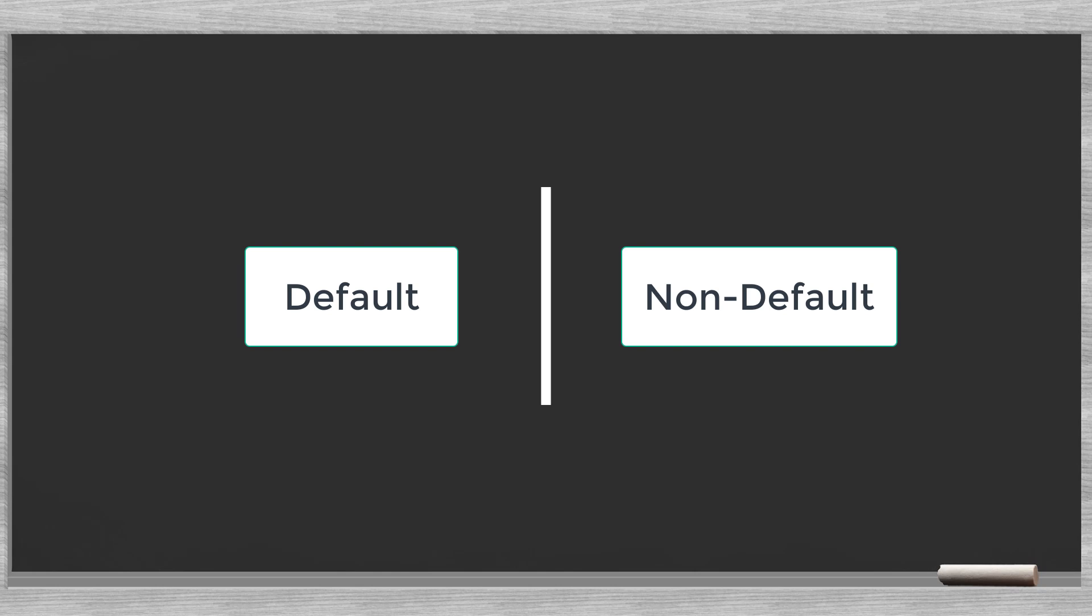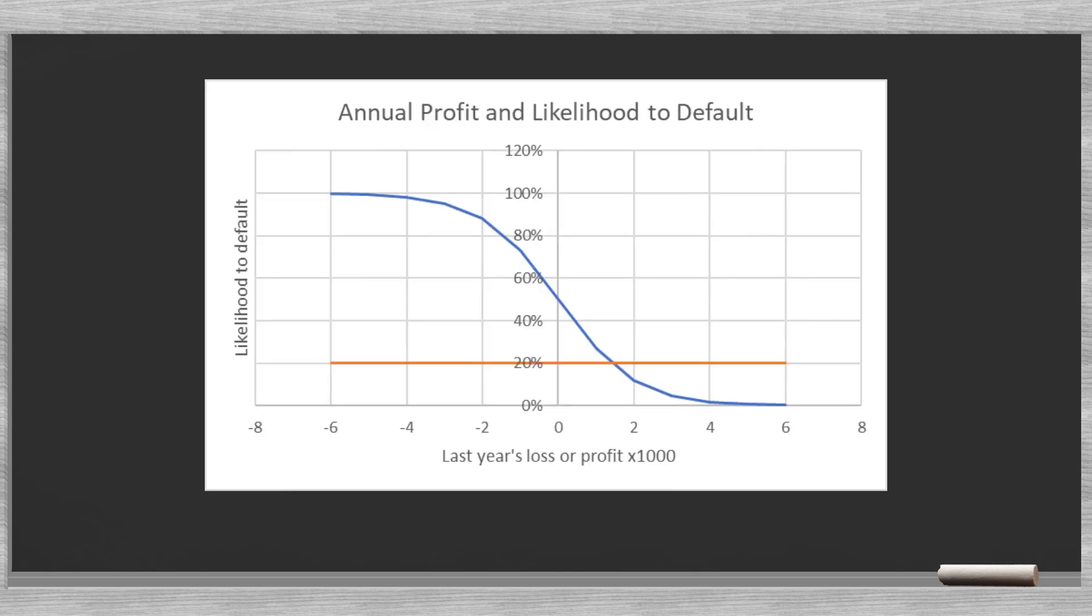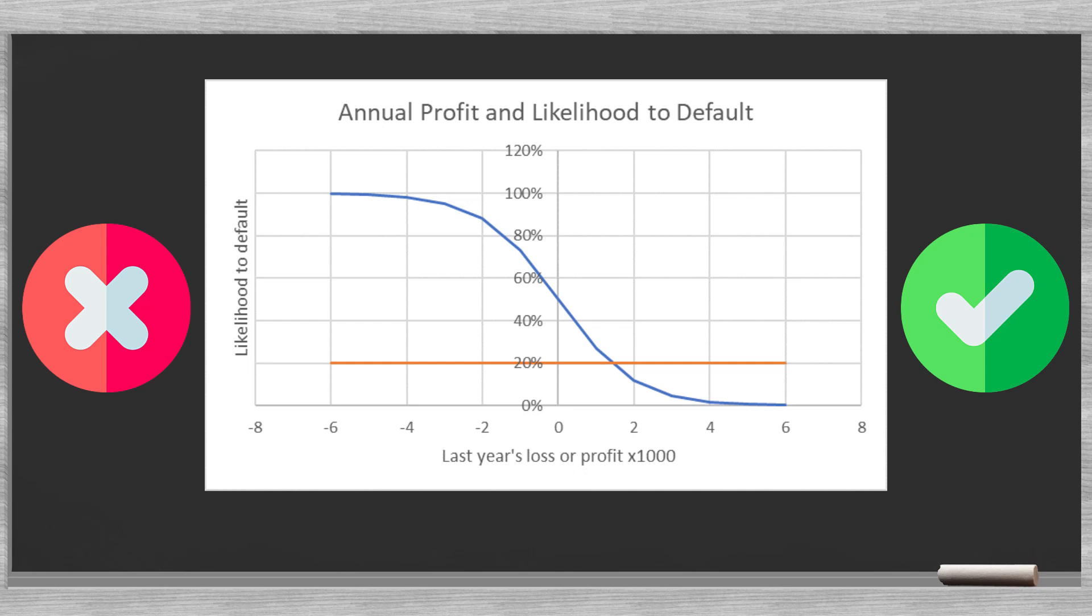This binary output helps us to classify an input in two classes, default or non-default. We do this by defining a threshold. We could for instance say that we classify clients below the 20% cutoff as non-defaulter, and above 20% as clients with a high default probability. We notice that we translated the continuous input of company results into a yes or no classification.